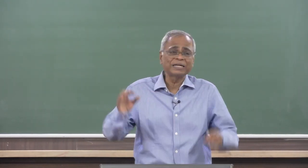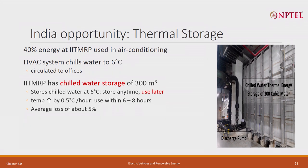Essentially it is acting like a storage — whenever there is excess electricity I store energy in the form of chilled water, and whenever there is a deficit I use that chilled water to cool the building without running the chiller. All that is needed is a thermal storage tank. Will the temperature keep going up slightly? If kept at 6 degrees centigrade, depending on thermal insulation it may go up by 0.5 degree per hour — so in 6 hours it goes up by 3 degrees. With more thermal storage it could be only 0.25 degree per hour. We will assume average loss is about 5 percent.